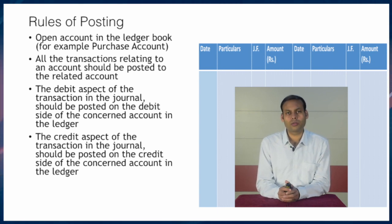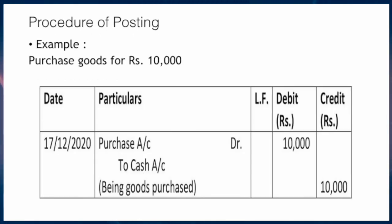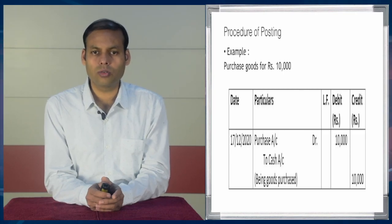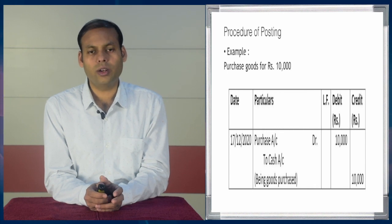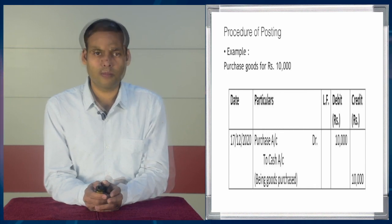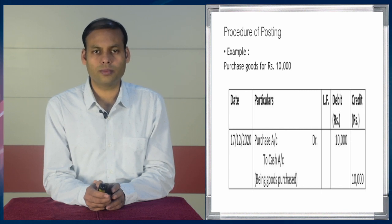To have a clear understanding of this procedure and rules, let us take an example: purchase goods for rupees 10,000. For convenience, the journal entry is shown here — purchase account debit to cash account. This is the journal entry for the transaction 'purchase goods for rupees 10,000.' Cash account is credited and purchase account is debited in the journal, with the narration 'being goods purchased.' This is a cash purchase transaction.